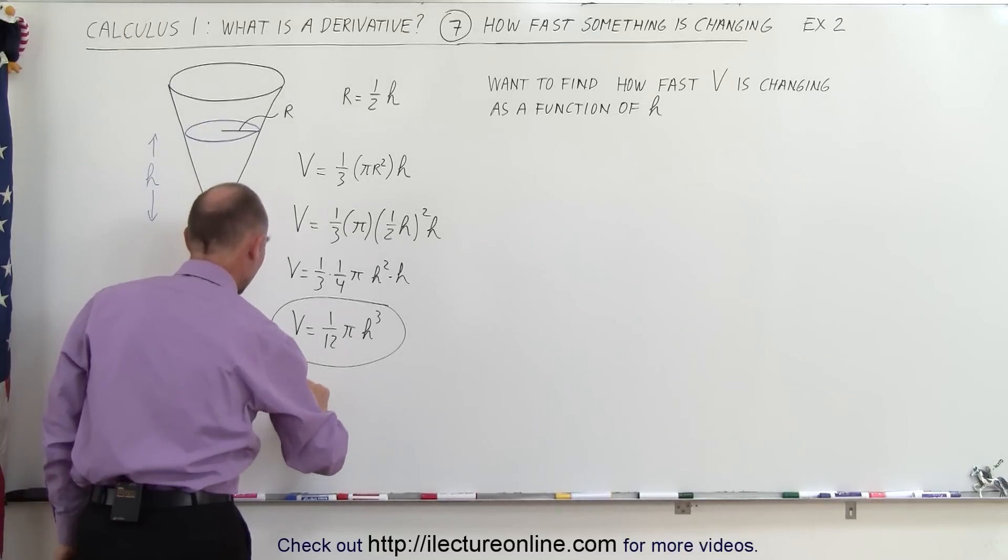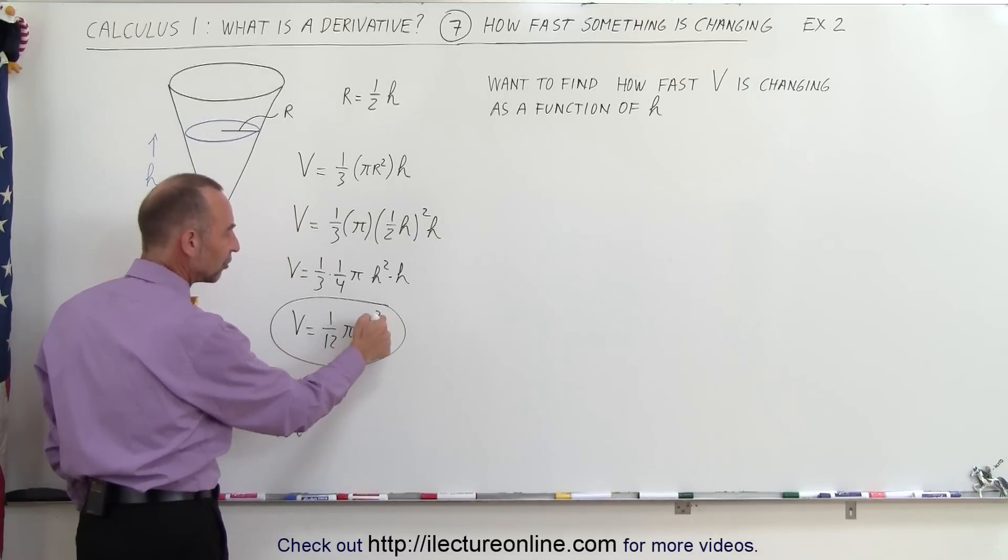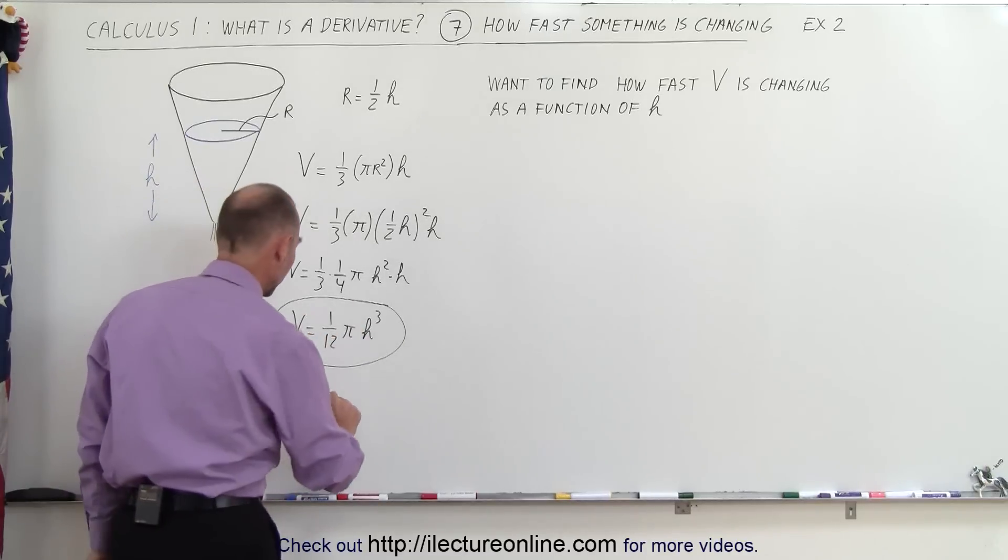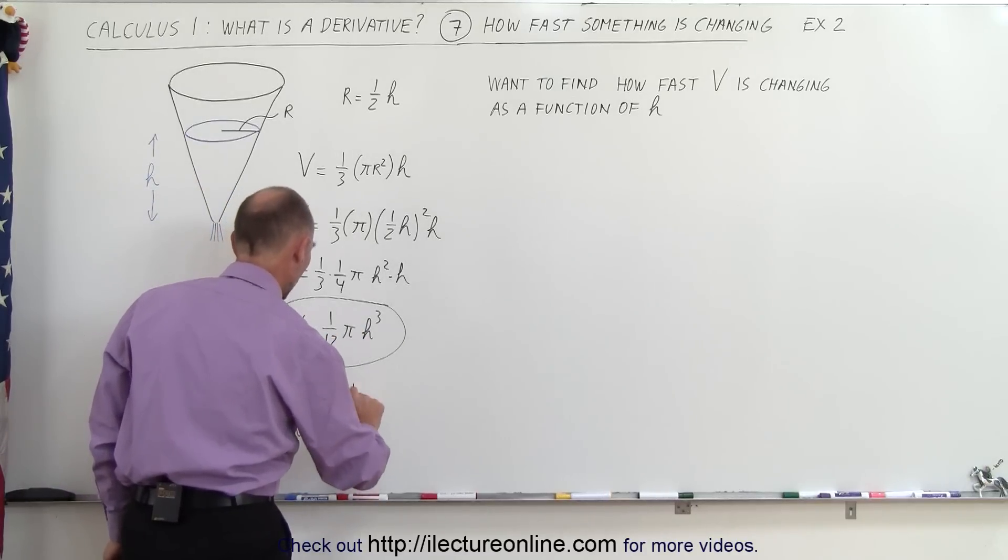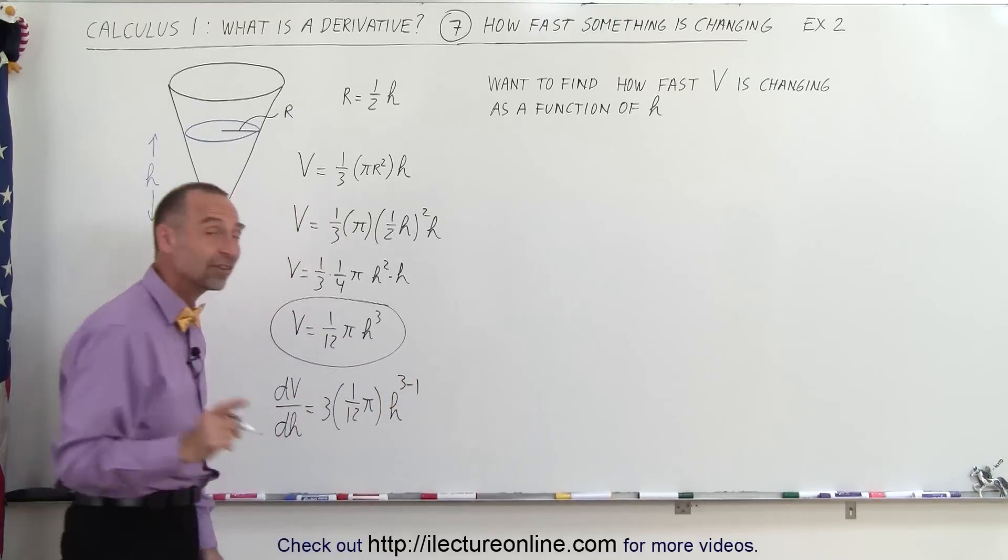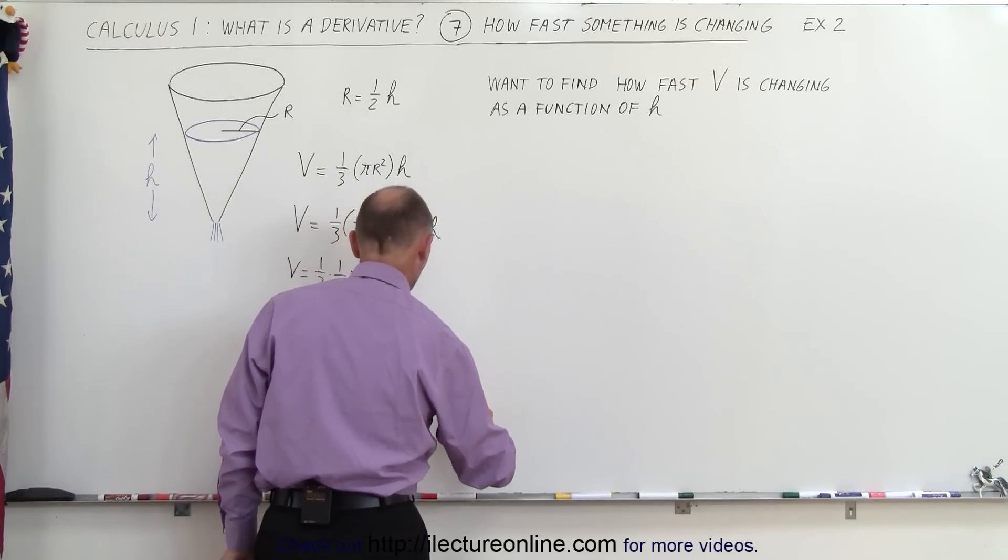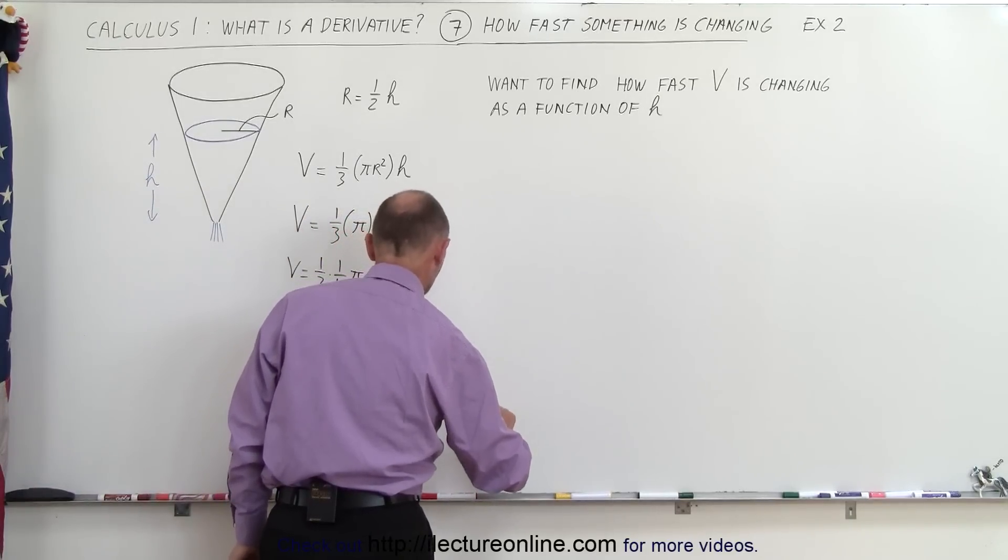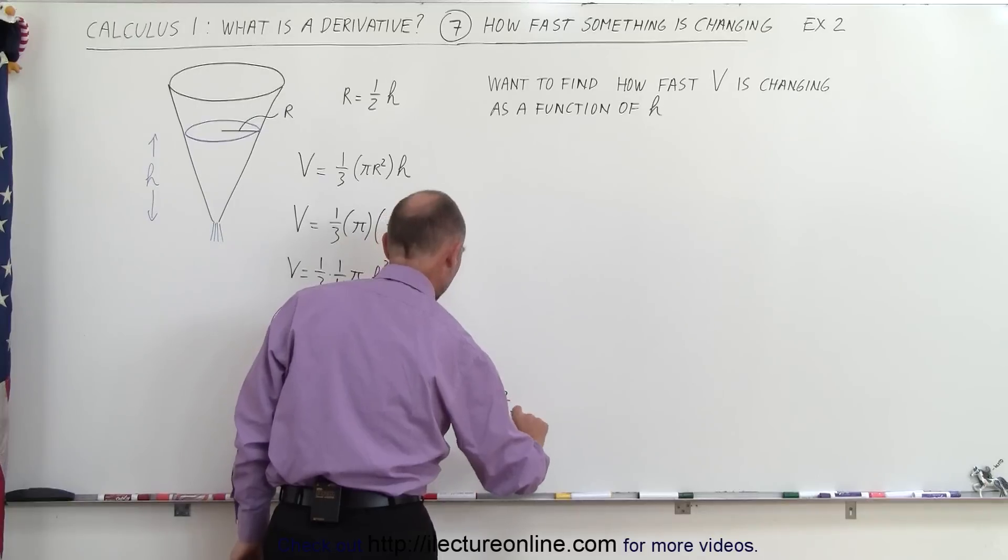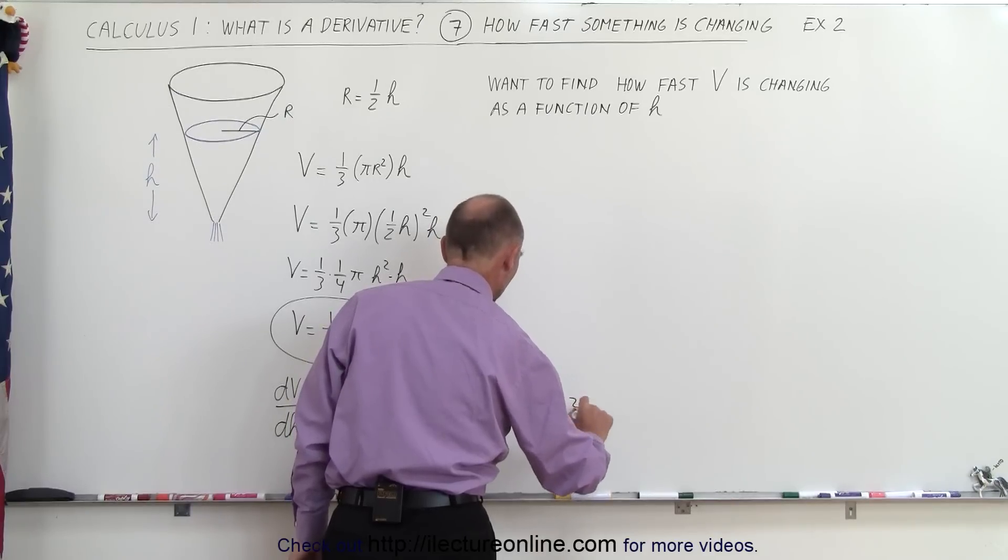What we want is we want to find dV/dh. Notice that all these are simply constants. We're going to take the exponent, put in front, multiply times the constant, and subtract one from the exponent. So this is equal to 3 times one-twelfth π times h to the 3 minus 1. Remember, that was the technique to find the derivative. So this would then become equal to 3 over 12 times π times h squared, and 3 over 12 is the same as one-fourth, so one-fourth πh².